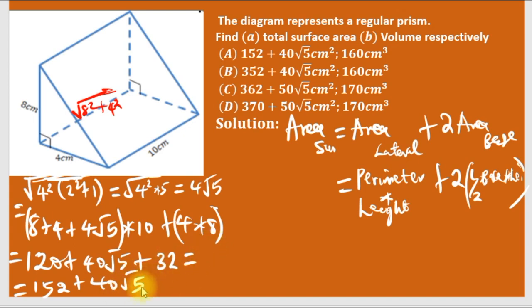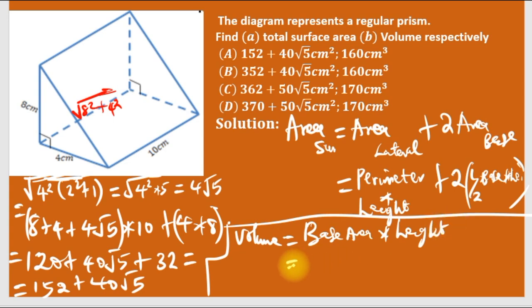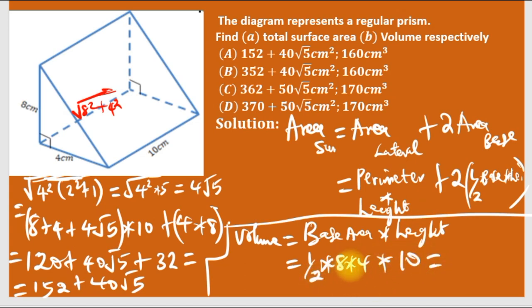Plus 8 times 4 is 32. So our total surface area is 120 plus 32 plus 40 root 5, which is 152 plus 40 root 5. For the volume, volume is base area times height. The base area is half times 8 times 4, times height 10, giving 16 times 10 equals 160. So our answer is A.